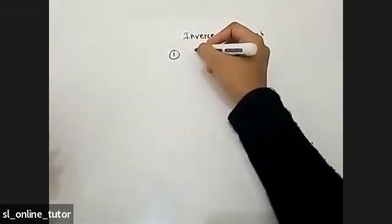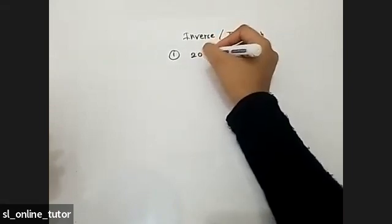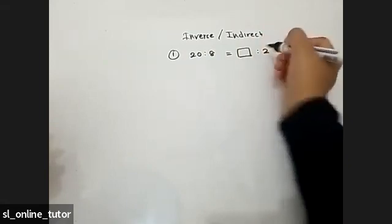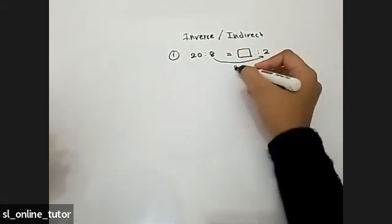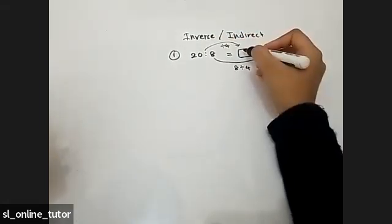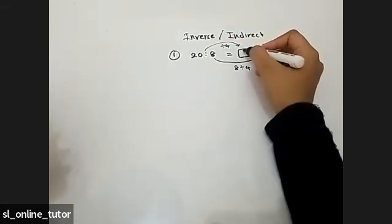Look at the first question. Fill in the cage, 20 is to 8, equal to cage is to 2. So how has this second term reduced to 2? 8 divided by 4. So this 20 also should be divided by 4. 20 divided by 4, how much you get? 5.